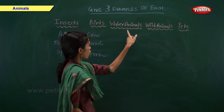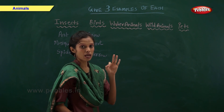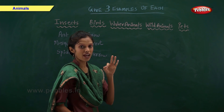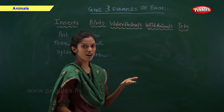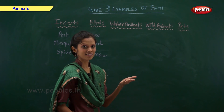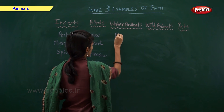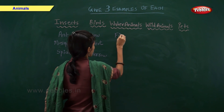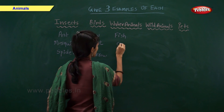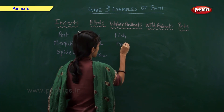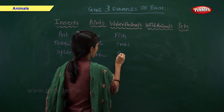Water animals — give me three examples of water animals. Come on fast. Right: fish, crabs and frog.